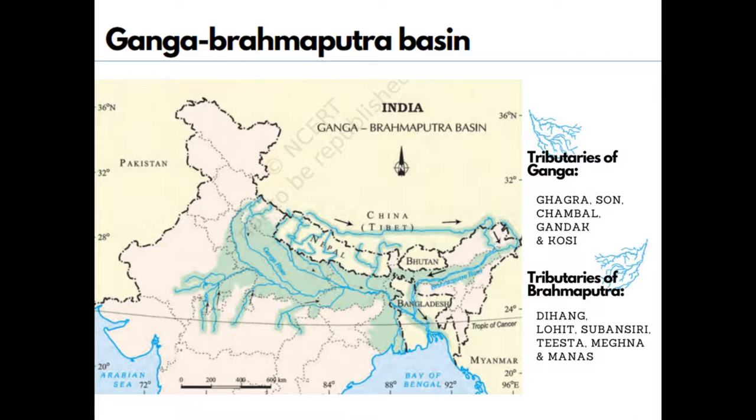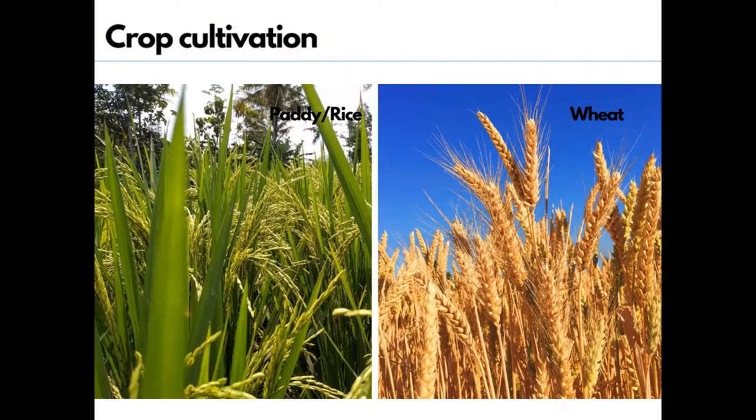Some important physical features of this basin include the Ganga-Brahmaputra plains. We can see oxbow lakes in the plain region. Other landscape features include the Sundarbans, mountains, and foothills of the Himalayas. The area is mainly dominated by monsoon climate and monsoon winds, which bring rain here from mid-June to mid-September.